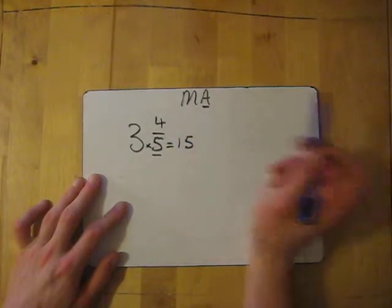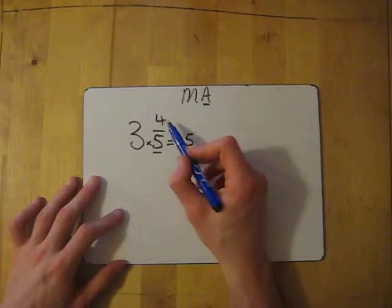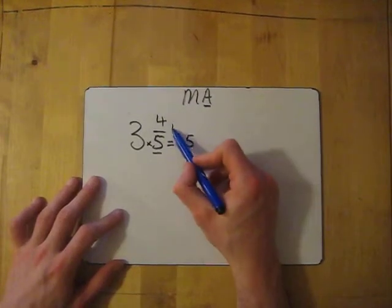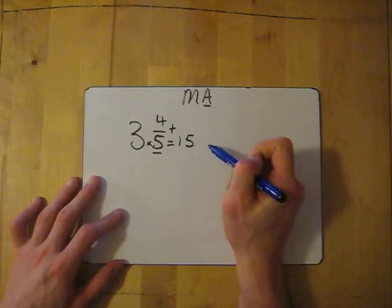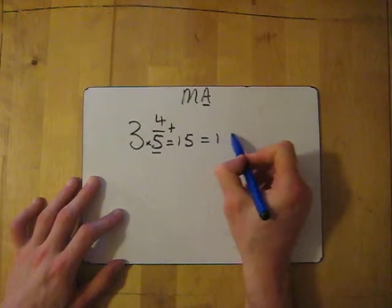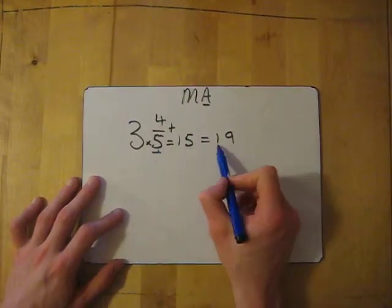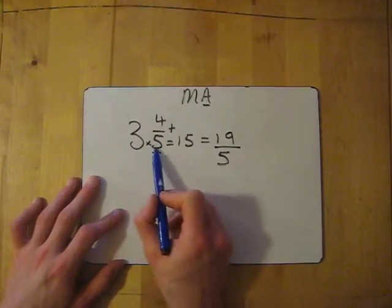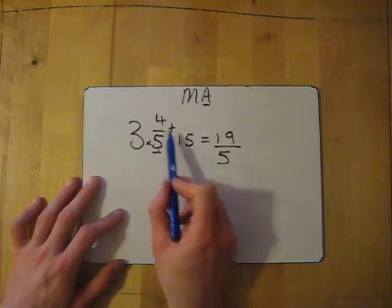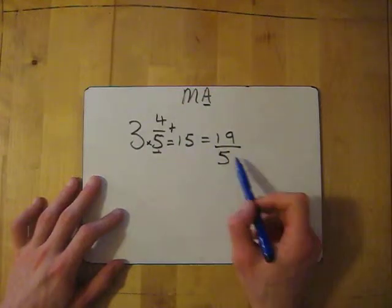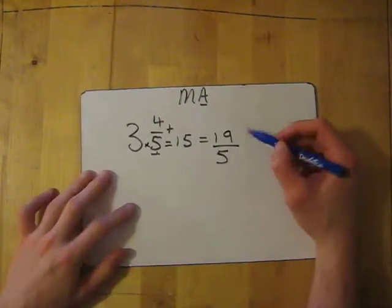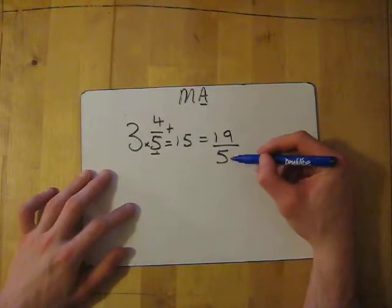So you go 3 times 5 equals 15. Then you have to add. And what have you not used at all in the question? You haven't used the 4 yet. So you add the 4 and the 15, which equals 19. And the denominator will always stay the same. So it becomes 19 over 5. So we multiply, which gives us 15, and then we add, which gives us 19. And the answer, as an improper fraction, is 19 over 5.